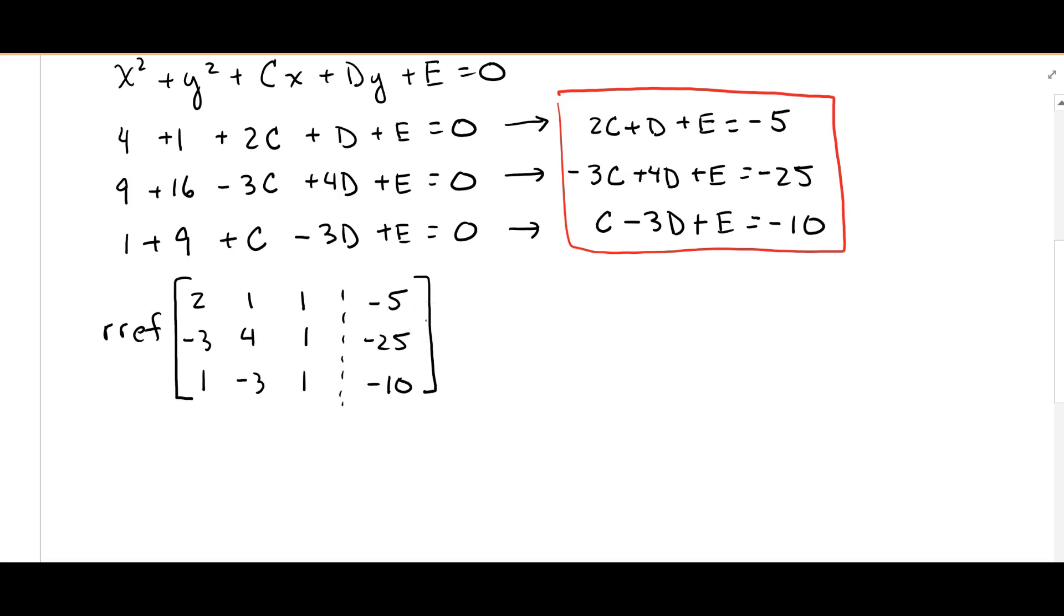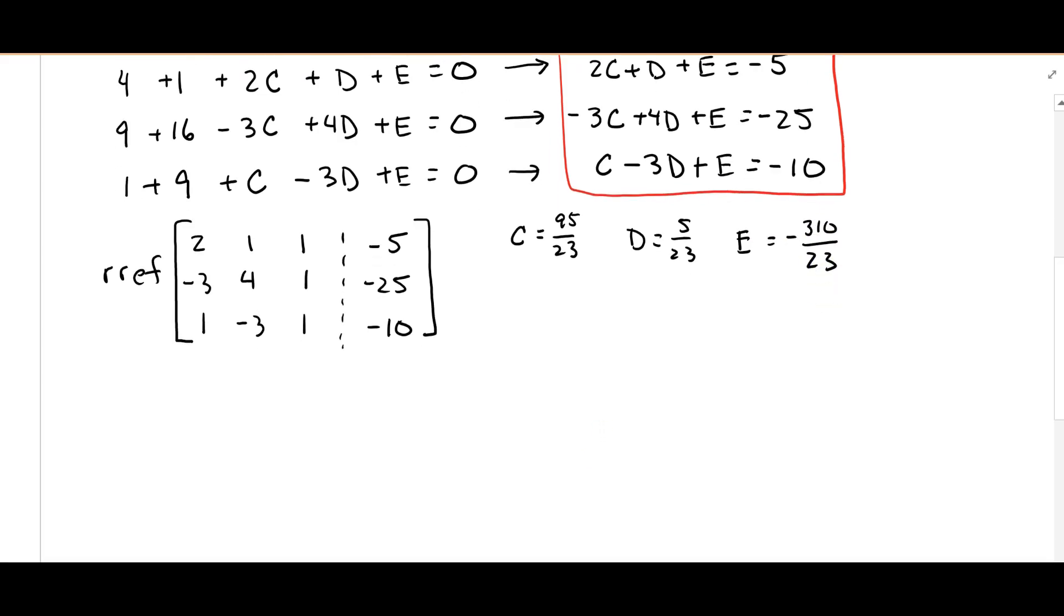You can use the change to fraction button, it's math number one change to fraction, and you'll get that c is negative 20 thirds and d is 5 thirds and e is negative 10 thirds. So use your calculator to help you with all these fractions.